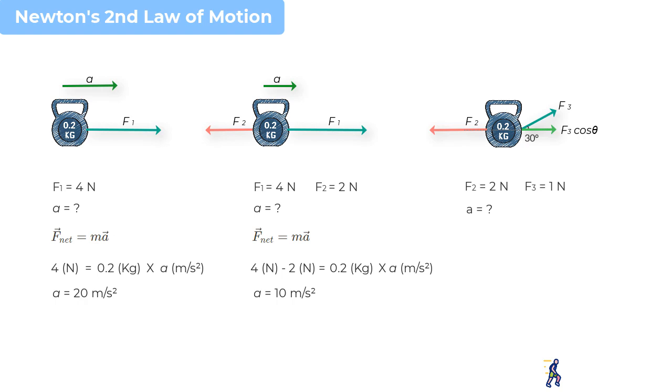now we can write the equation F_net = ma as follows. On the left-hand side, you have F3 cos θ acting in the positive x direction, and force F2 acting in the negative x direction. And this should equal 0.2 into a in the x direction. And when we solve for a_x, what we get is minus 5.7 meters per second squared. So, the acceleration is now in the negative x direction.